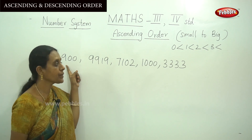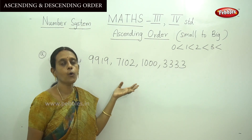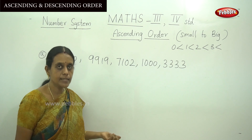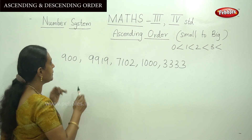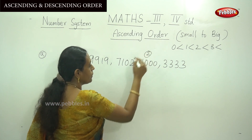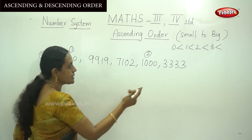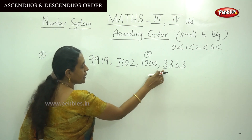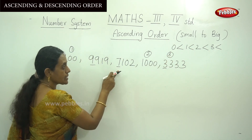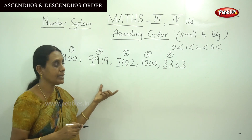First, that is 900, which has 3 digits. All other numbers have 4 digits each. A 3-digit number is always lesser than a 4-digit number, so 900 comes first. Then compare the remaining 4-digit numbers by their first digit: we have 3, 7, and 9. Since 3 is lesser than 7 and 7 is lesser than 9, arrange them accordingly.